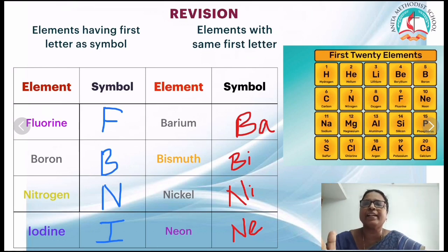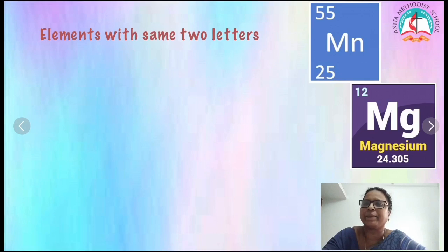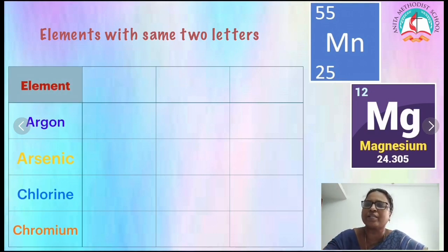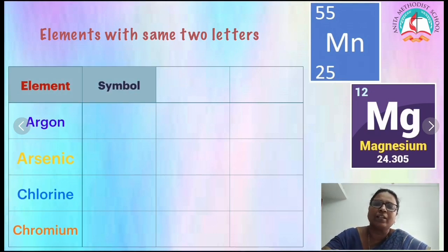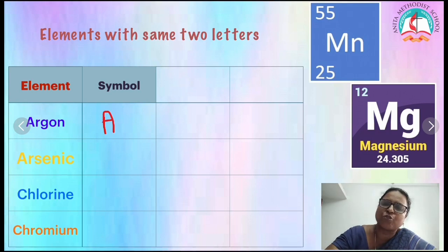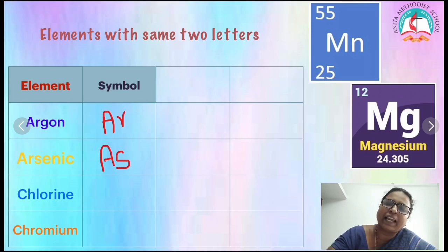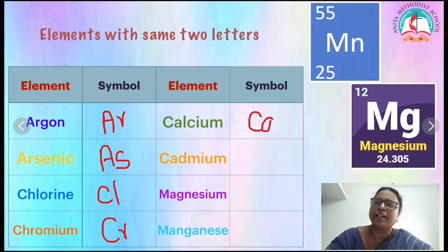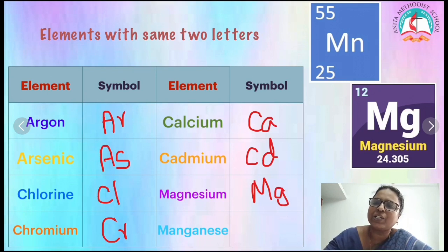We write the first letter followed by the second letter. When elements share the same first two letters, we use a different second letter. Argon is Ar, arsenic is As. Chlorine is Cl, chromium is Cr. Calcium is Ca, cadmium is Cd. Magnesium is Mg, manganese is Mn — here using the first and third letter.